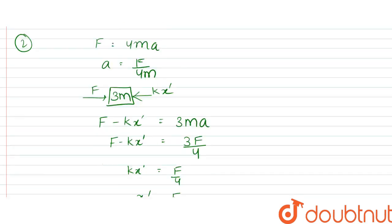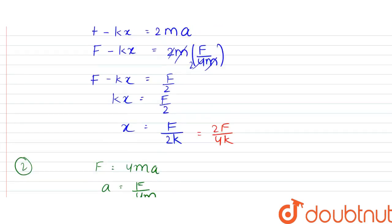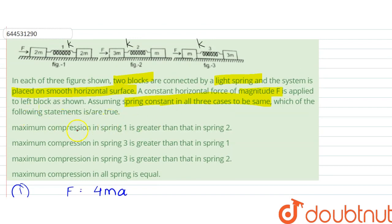The maximum compression occurs in third case, then in first case. So maximum compression in spring 3 is greater than that in spring 1. That is correct.